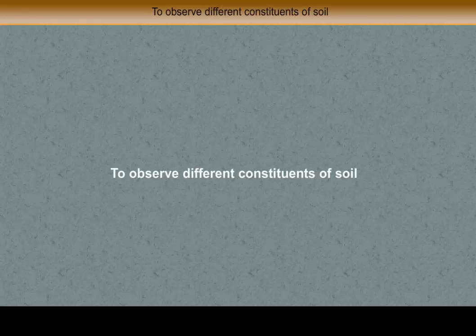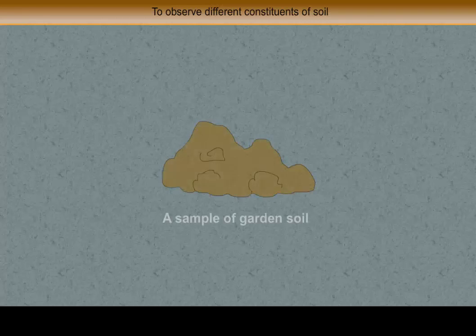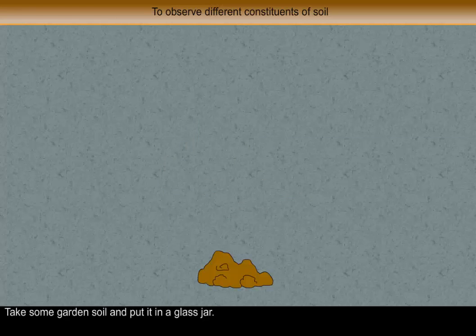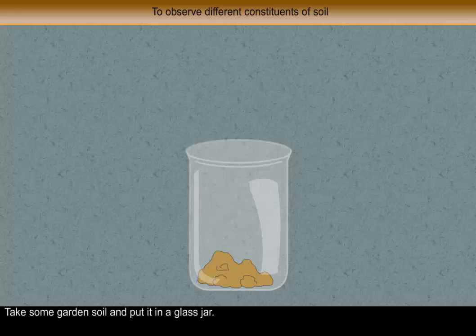Observe different constituents of soil. Things required: a sample of garden soil and a glass jar. Procedure: take some garden soil and put it in a glass jar, pour water in the jar so that it is two-thirds filled up.